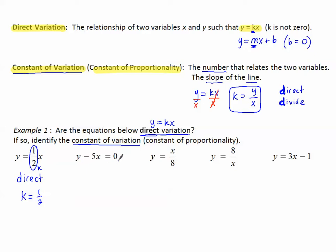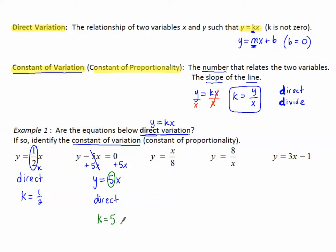How about the next equation? It doesn't look like y equals kx at first because there's subtraction, but zero is on one side. If I move the x term by adding 5x, I end up with y equals 5x. Yes, this is direct variation — y equals a number multiplied to x. That number is k, so k equals 5; the constant of variation is 5.